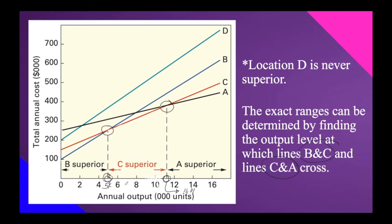If your quantity is between 5,000 and 11,111, you should choose location C. If your quantity is 5,000 or lower, you should choose location B. If your quantity is 11,111 or higher, you should choose location A.